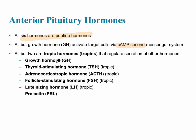These six hormones include growth hormone (GH), thyroid stimulating hormone (TSH), adrenocorticotropic hormone — which stimulates the cortex of the adrenal gland — follicle stimulating hormone (FSH), luteinizing hormone (LH), both of which are reproductive hormones, and prolactin (PRL).